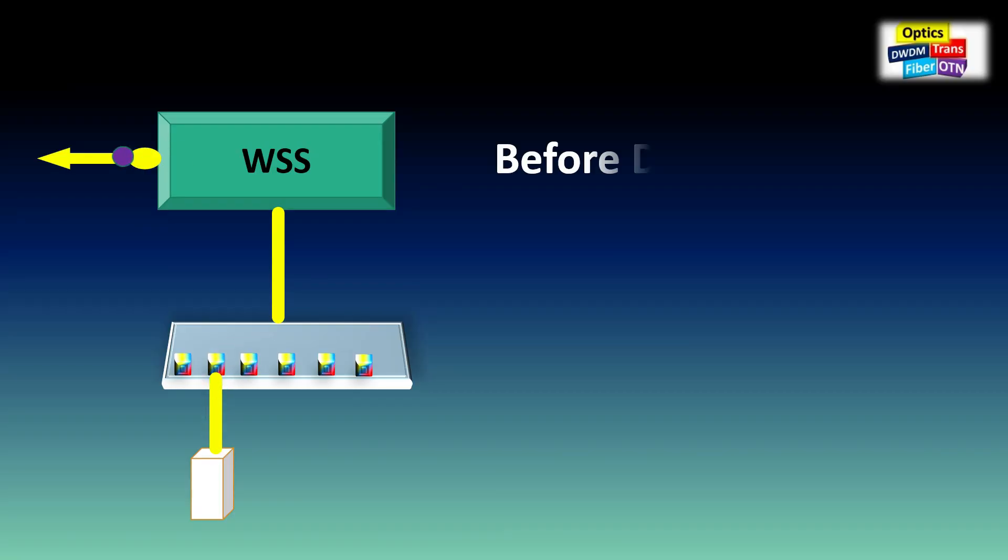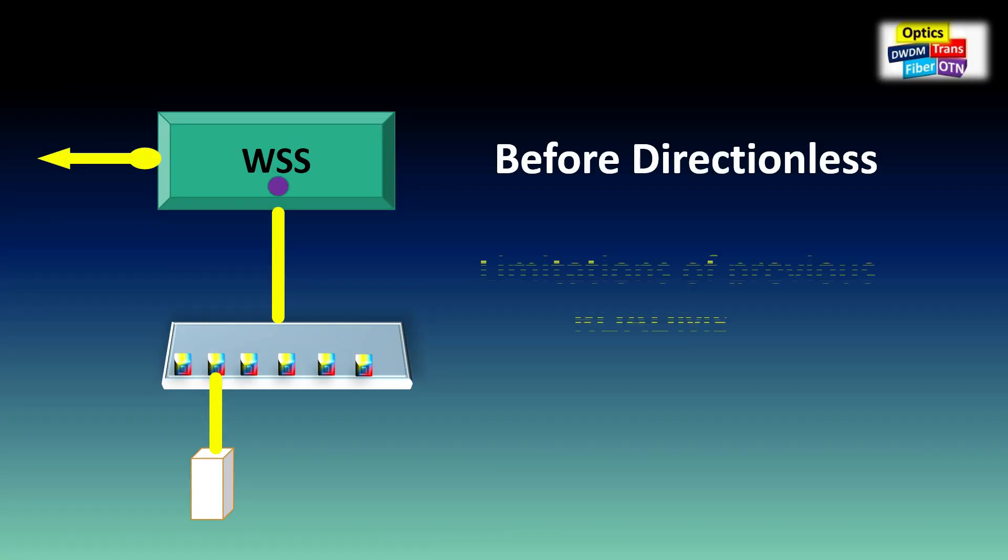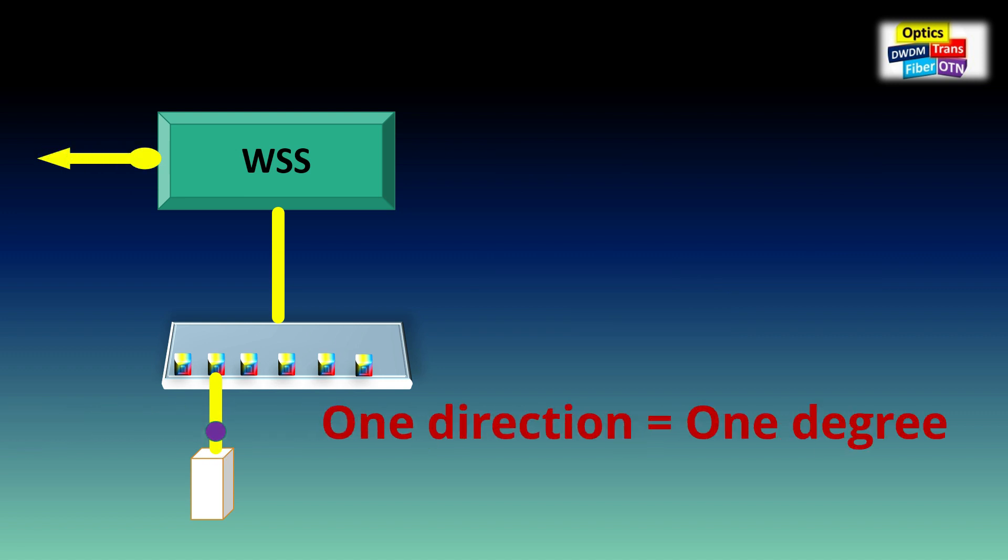Directionless, but before directionless, let's see what are the limitations of previous ROADM. Original ROADM technology dedicated an add-drop complex for each ROADM degree. One degree is equivalent to one fiber link direction. One direction equals one degree.